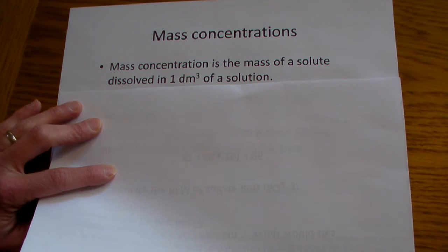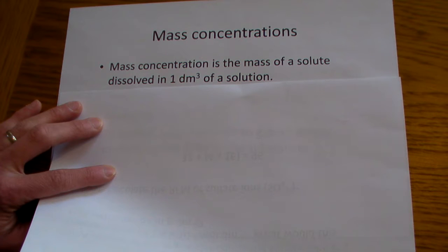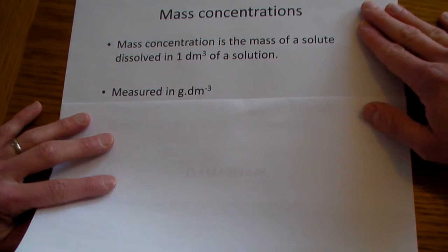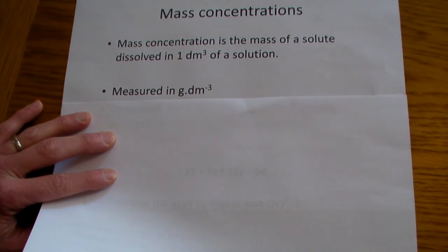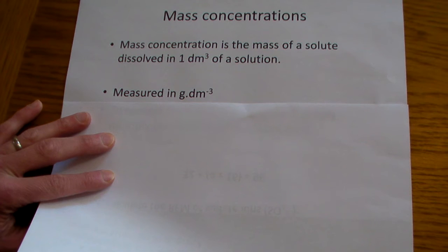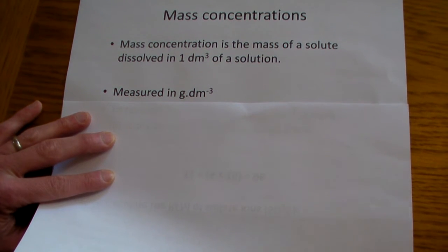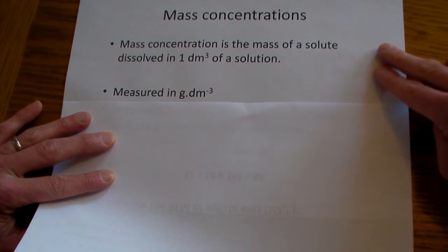So I've got a bit of a revision here on mass concentrations. Mass concentration is just the mass of a solute dissolved in one decimetre cubed of a solution, and its units are grams per decimetre cubed. One of the things you have to be able to do at A-level chemistry is to convert between mass concentrations, given in grams per decimetre cubed, and a normal molar concentration, which is in moles per decimetre cubed.